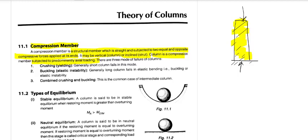When we differentiate between a column and a strut: a column is our vertical member. But a strut can be vertical also — it can be straight, vertical, or inclined. So that is how we differentiate strut and column.